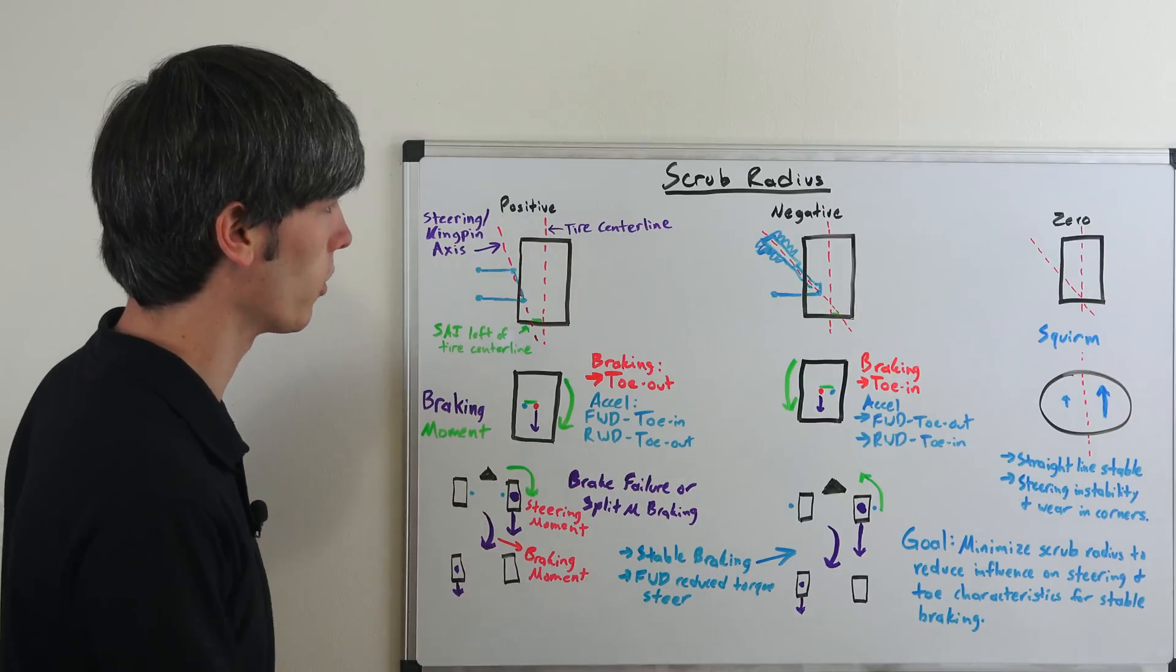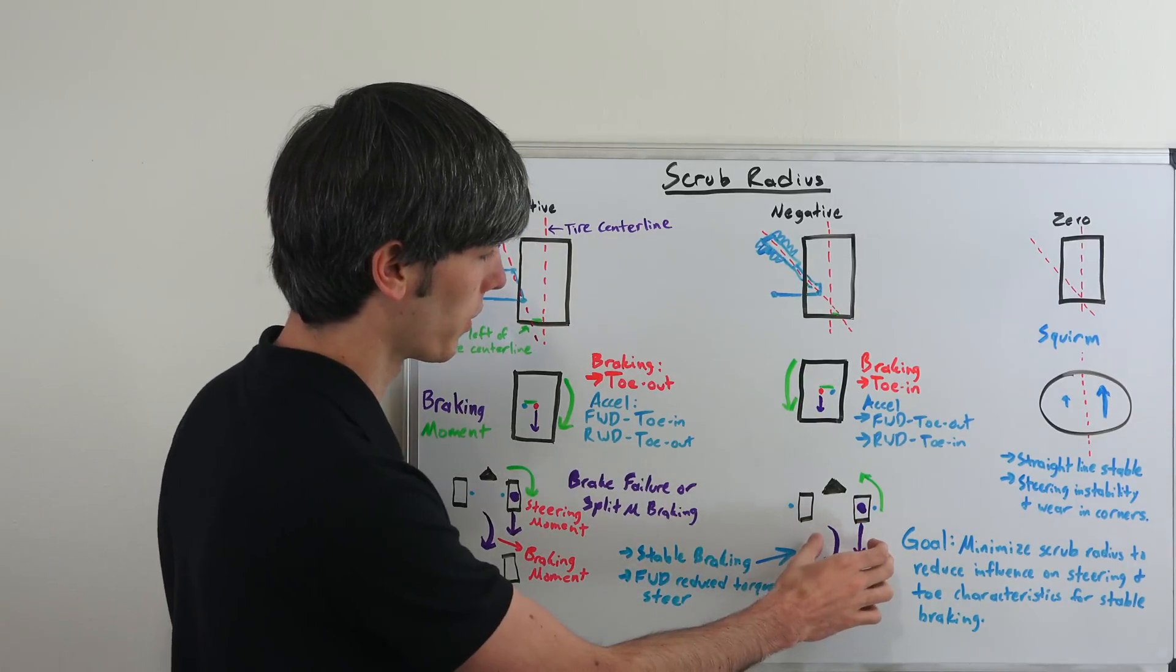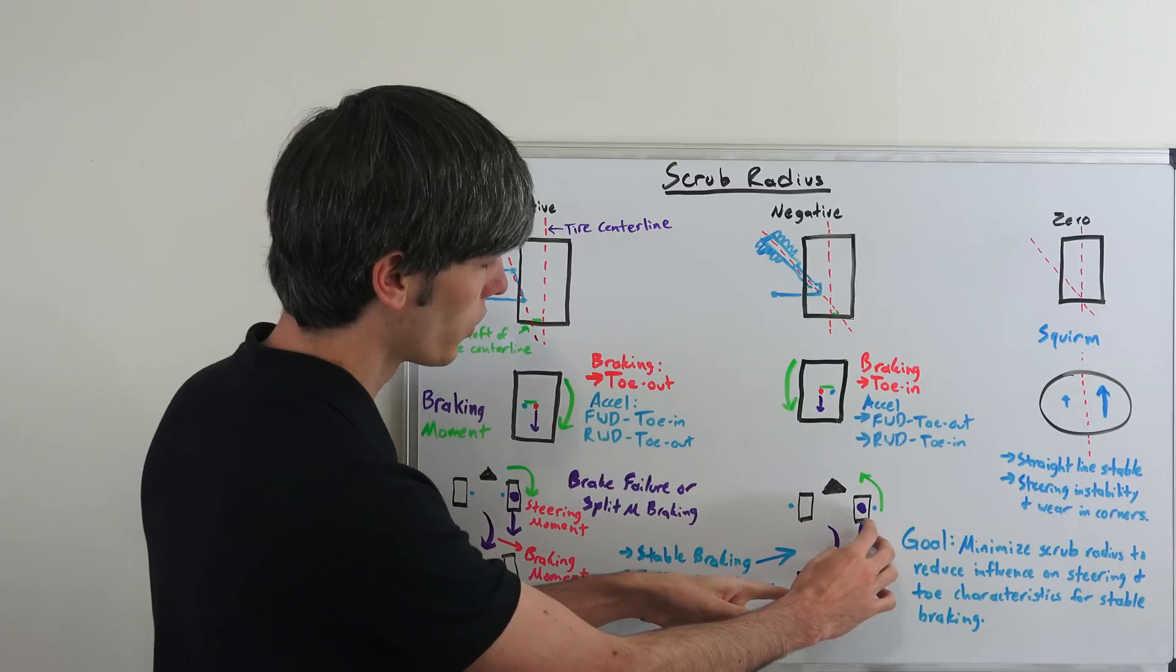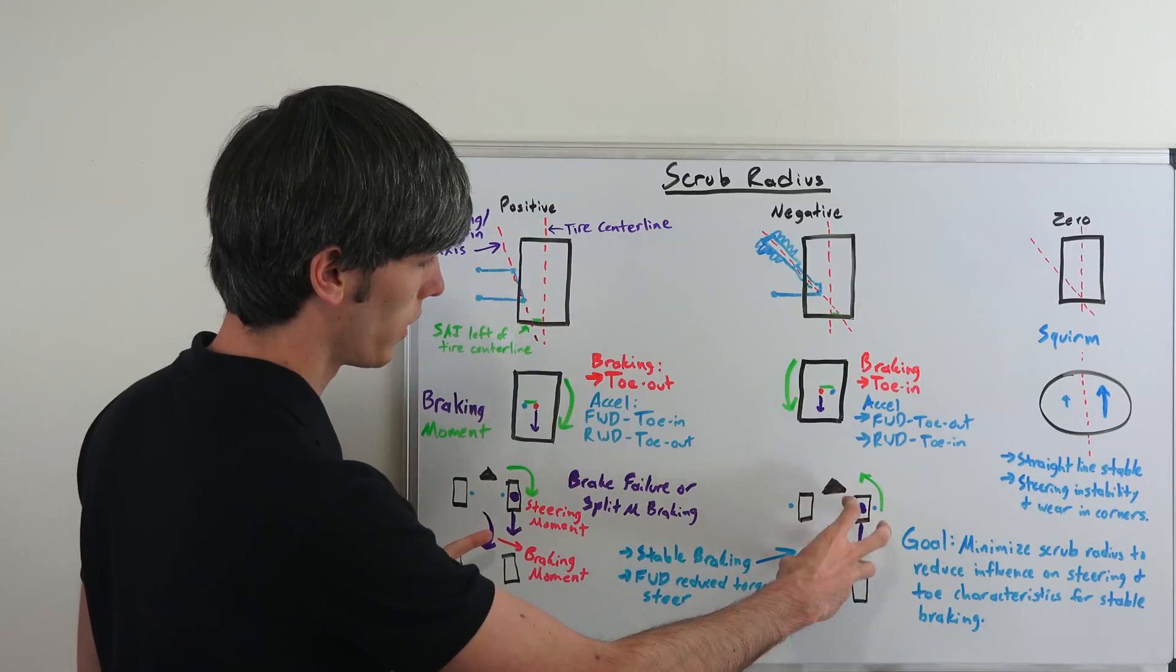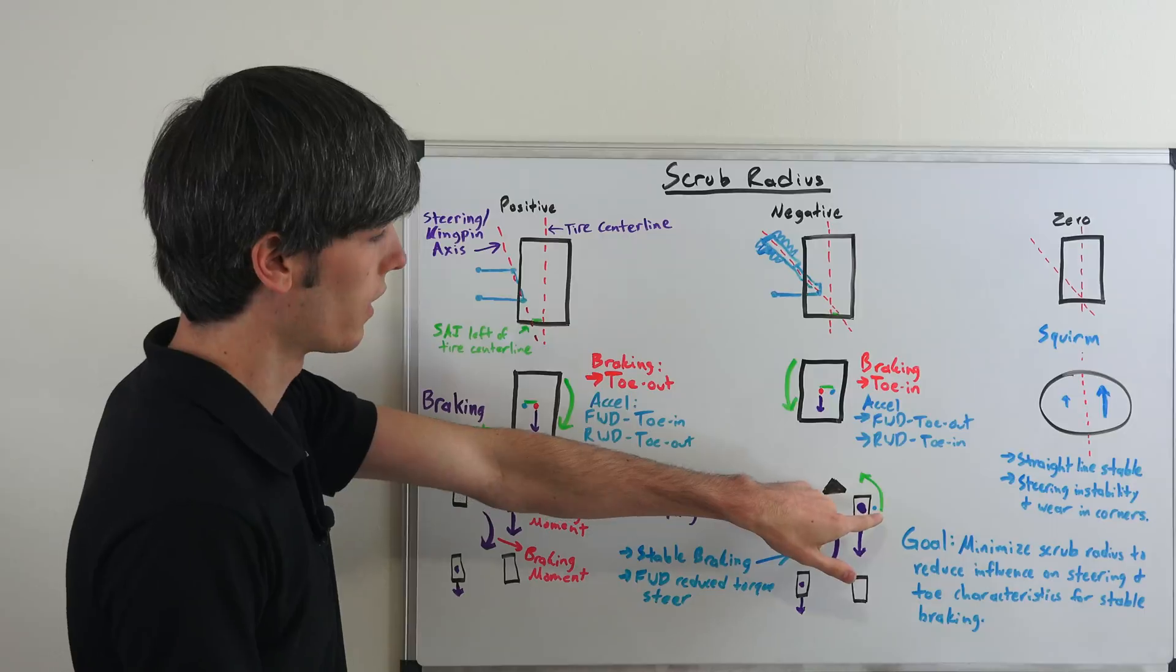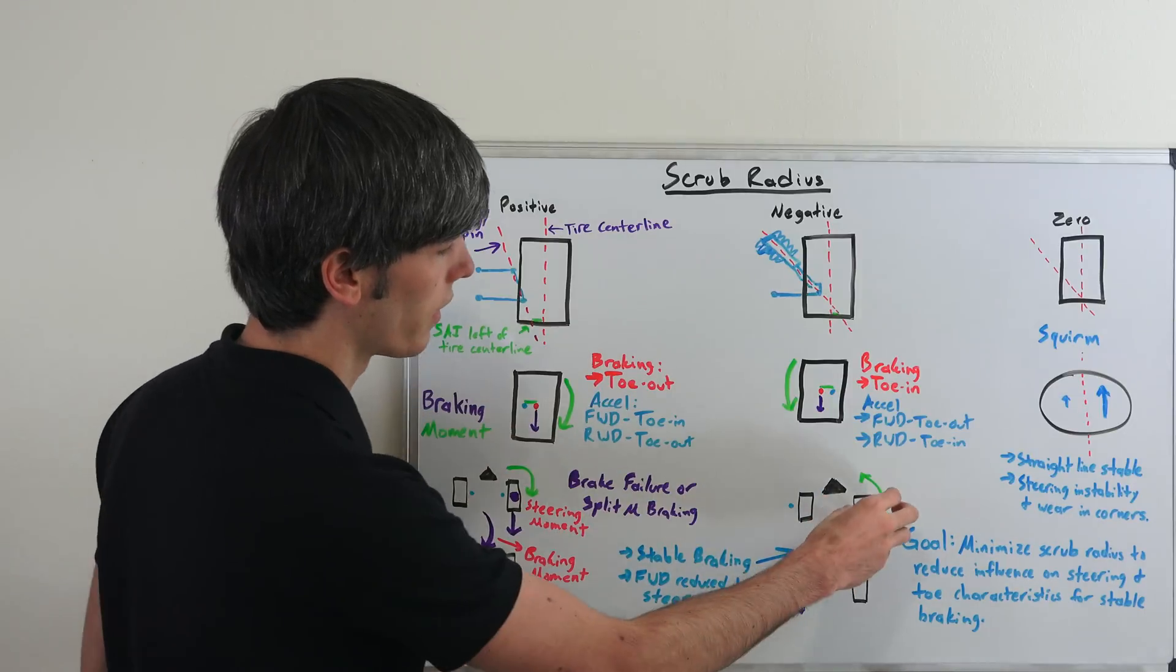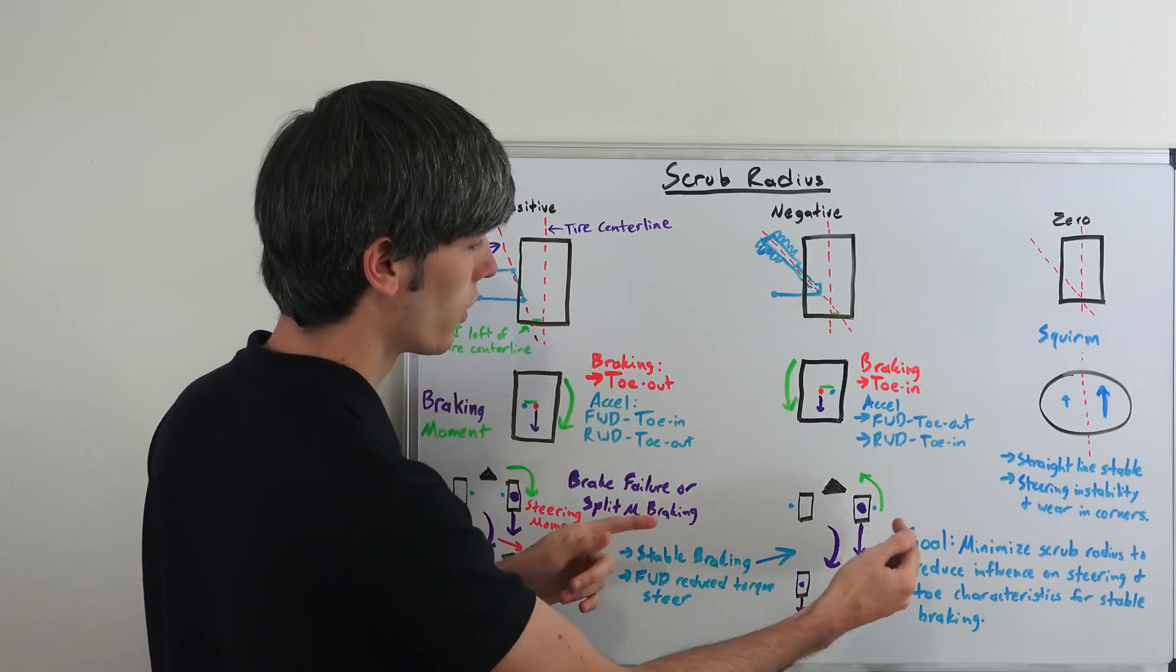But nevertheless it's going to be less stable. Now if you have a negative scrub radius, for example in this example we have here, so you've got more braking up front and as we had here the moment of the car is going to want to rotate like this. However, because we have negative scrub radius here...